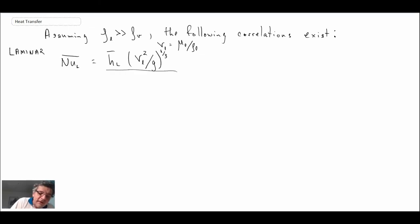Then we're going to divide by the thermal conductivity of the liquid. This is then given by the expression 1.47 Re_δ. This obviously would apply only in the laminar flow regime, so that means the Reynolds number has to be 30 or less.